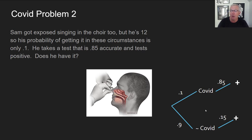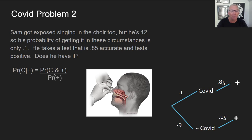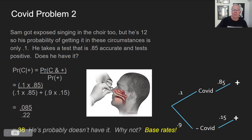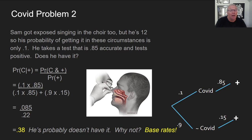Here's Sam's pruned tree. It looks very much like the last one, except now we have 0.1 and 0.9, whereas before we had 0.3 and 0.7. The question is the same: what's the probability he's got COVID given he tested positive? Drawing those numbers off the tree and adding the denominator gives 0.38. So Sam goes from 0.1 with a positive test result up to 0.38.